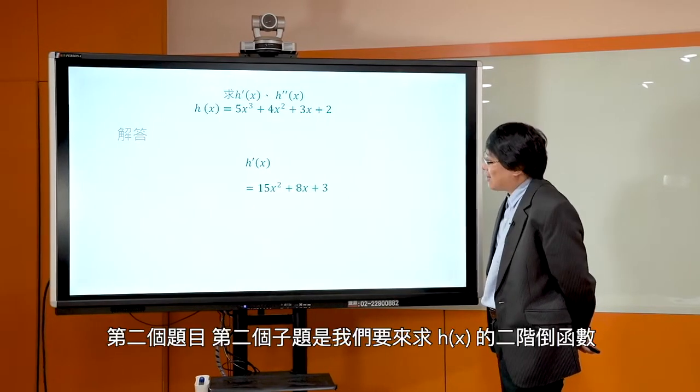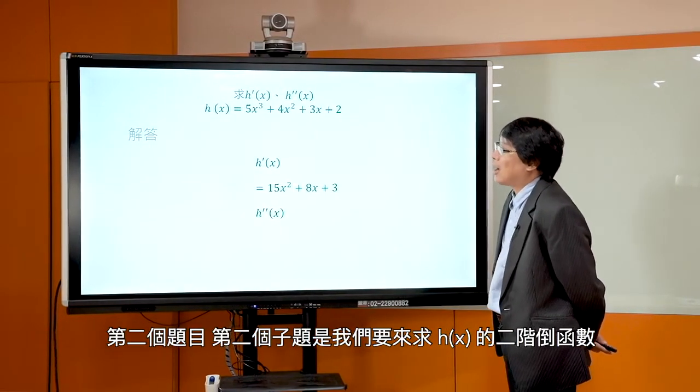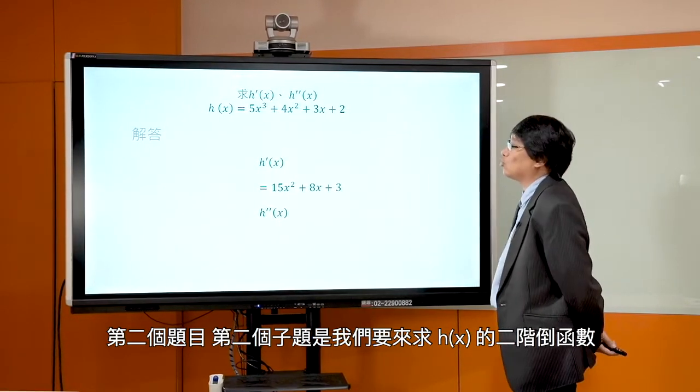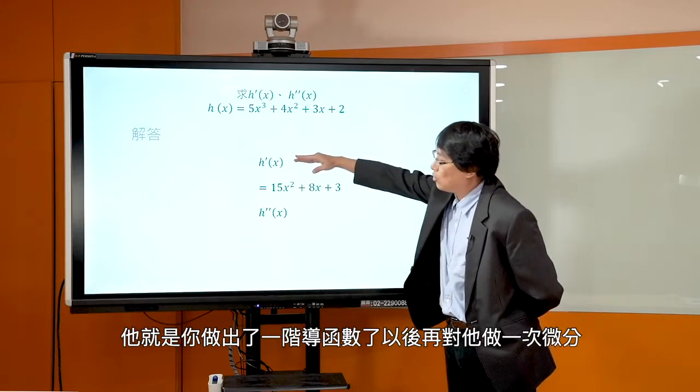所以这一题 H'(x) 的一阶导函数就会是 15x² + 8x + 3。各位有做对吗？希望有做对。那第二个子题呢，是我们说要来求这个 H(x) 的二阶导函数。所谓的二阶导函数，就是你做出了一阶导函数以后再对它做一次微分。所以对这个 15x² + 8x + 3 做微分，会是 15 乘上 x² 的微分是2x，所以15乘上2x就会是30x，加上8x的微分是8，3是常数所以是0。所以这个 H''(x) 就会是 30x + 8。各位有做对吗？